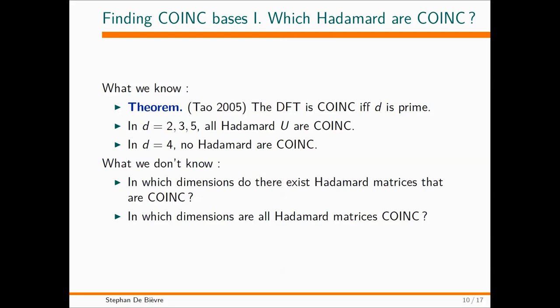It's easy to check by hand in dimensions two, three, and five. All Hadamards are completely incompatible. You can imagine that's not very hard to do, because there aren't very many of them around. You just check. In dimension four, no Hadamard is completely incompatible. In dimension four, we have a list—not very long, it's just one parameter. You check them and they're not. What we don't know—these are two questions that maybe some of you are willing to think about. I was happy with the talk of Professor Grayson before, because it's the same kind of approach. I'm proposing some questions that maybe somebody can answer.